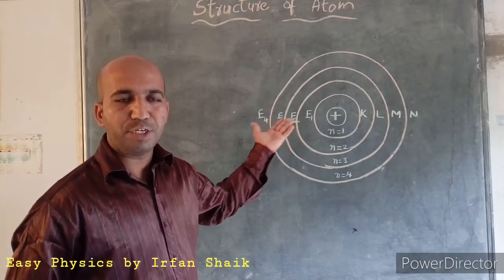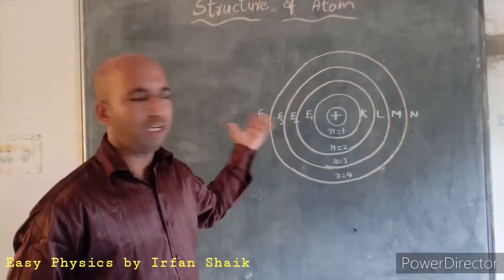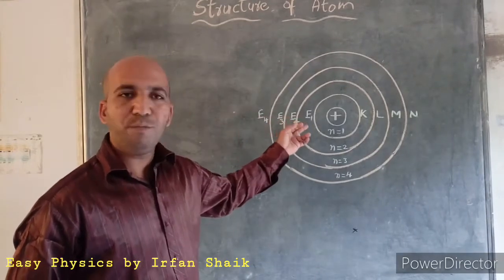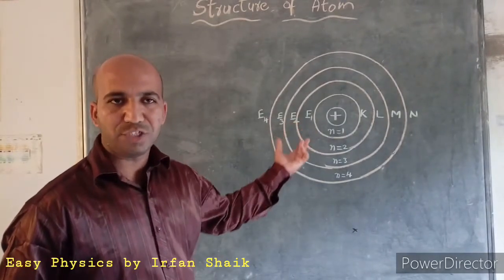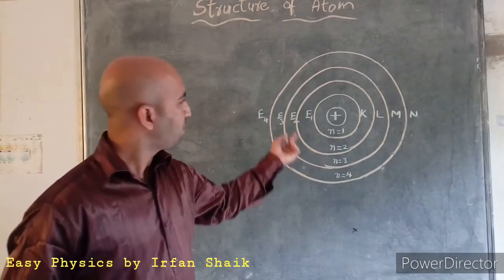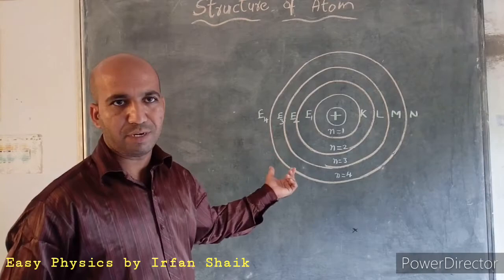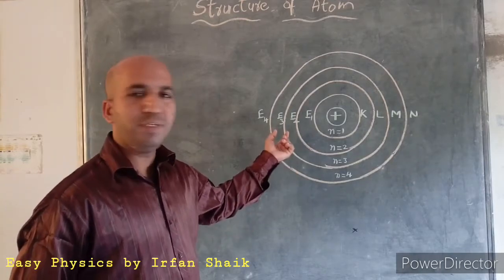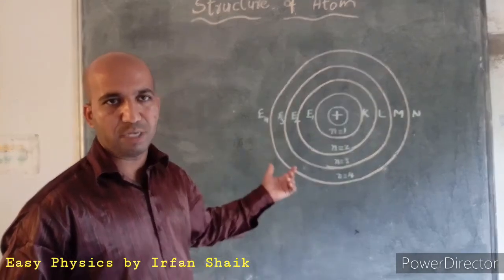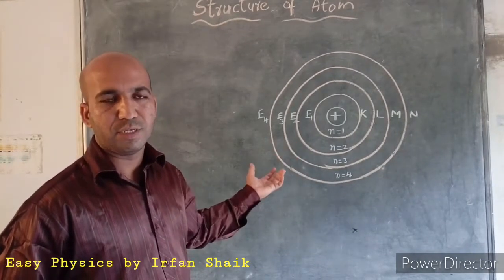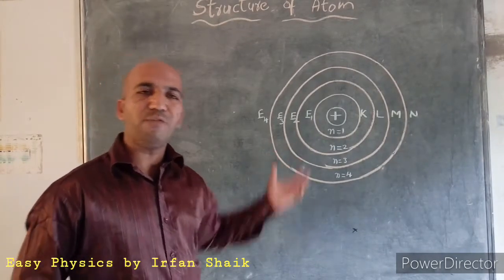These shells are also denoted as E1, E2, E3, and E4, because they are also called energy levels. E1 means the first energy level, E2 means the second energy level, E3 means the third energy level.